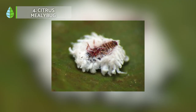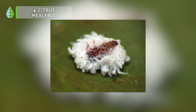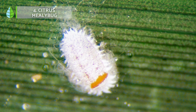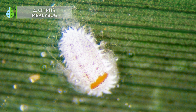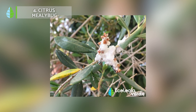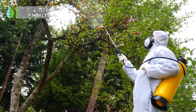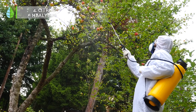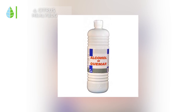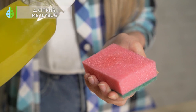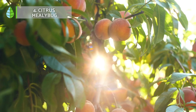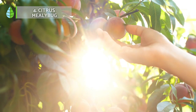Citrus mealybug. These soft-bodied insects are typically covered with a whitish waxy secretion, and they congregate in groups on the stems and undersides of leaves. Citrus mealybugs can damage citrus trees by sucking their sap, which can reduce the tree's vigor and growth and lead to leaf drop and fruit deformation. To combat them, mix one part water with one part rubbing alcohol and a teaspoon of dish soap in a spray bottle and spray the affected areas. Be sure to repeat the application every few days until the pests are gone.